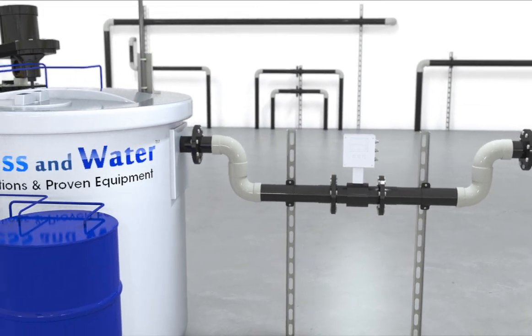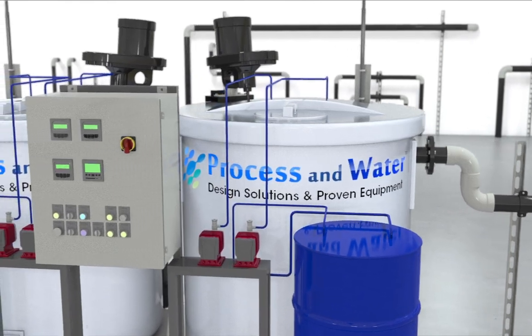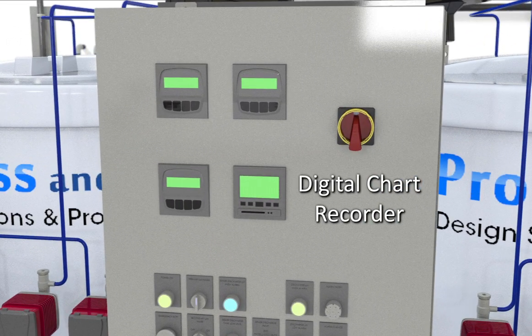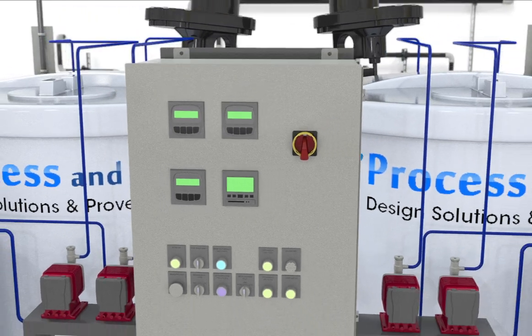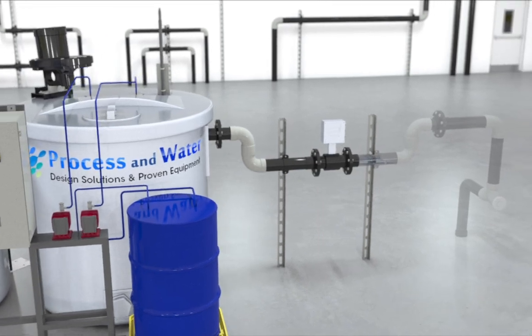The numerical value of the final pH and discharge flow rate are continually and instantaneously recorded on the panel mounted digital chart recorder. After the pH is monitored, the flow continues through the effluent pipeline, gravity fed to the sewer.